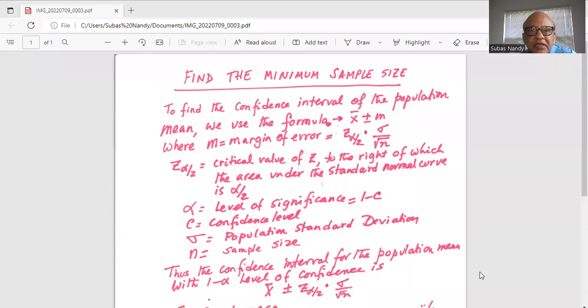To find the minimum sample size to find the confidence interval of the population mean, we use the formula x bar plus minus m, where x bar is the sample mean and m is the margin of error, which is given as the product of two things. One is z alpha by 2, the other is sigma divided by square root of n. So margin of error is z alpha by 2 multiplied by sigma divided by square root of n.